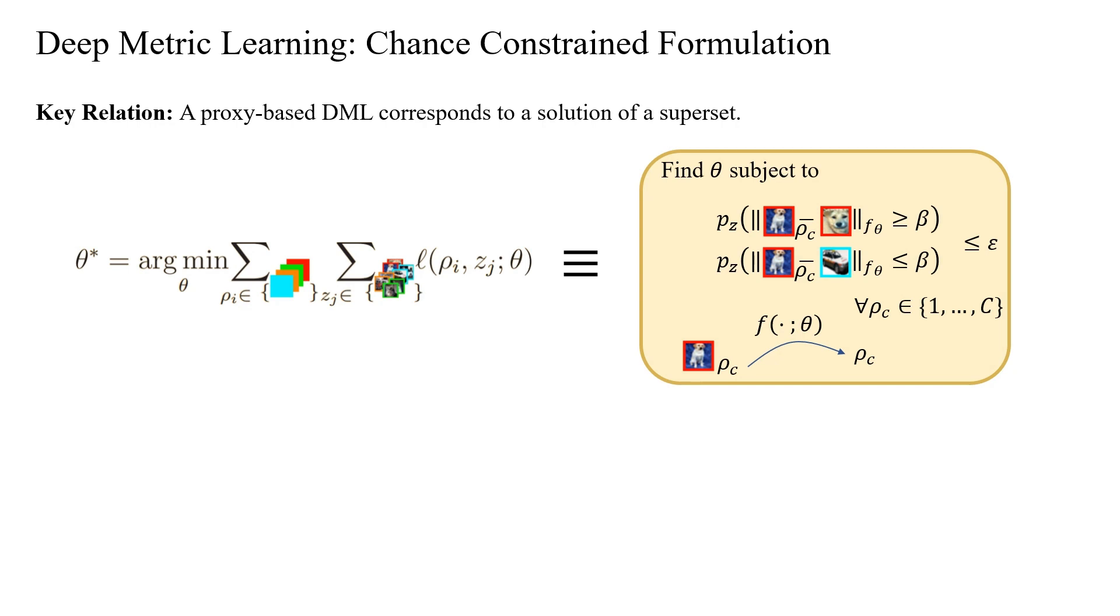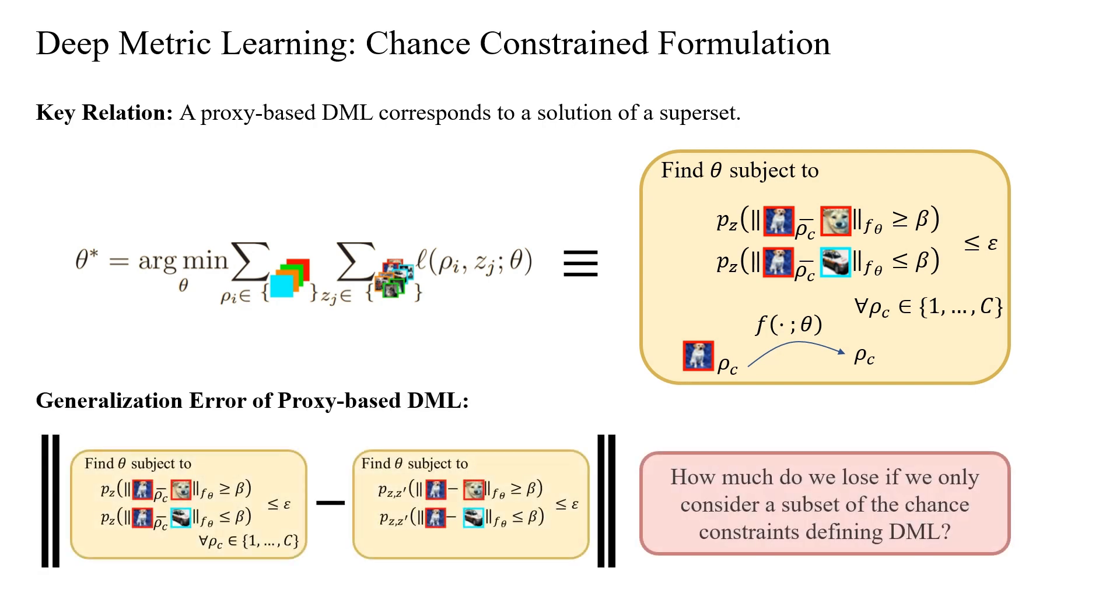Rather than sampling from the joint distribution of pairs, we select certain samples with the embeddings representing proxies and only sample from the marginal distribution. This perspective allows us to quantify the generalization error of proxy-based metric learning by assessing how much we lose when considering only a subset of the chance constraints that define the metric learning problem.